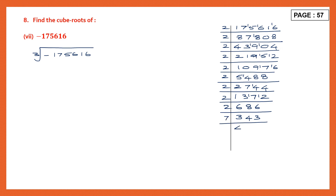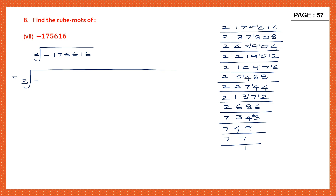We're going to use 7. 7 fours are 28, 6 is left: 63, 7 nines are 63. Then again 7 sevens are 49, and 7 ones are 7. So we've got all the prime factors of this number. Now we're going to put the minus sign outside and put all the numbers inside. Let's find the factors — how many 2s? 1, 2, 3, 4, 5, 6, 7, 8, 9 — nine 2s are there. Let's write it down: 2, 3, 4, 5, 6, 7, 8 and 9. And we have three 7s — 7 into 7 into 7. So we've got everything.